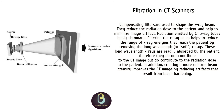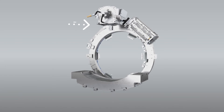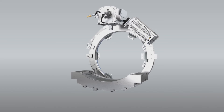The sixth component is filtration. Compensating filters are used to shape the X-ray beam, reduce radiation dose to the patient, and help minimize image artifacts. Radiation emitted by a CT scan X-ray tube is polychromatic. Filtering the beam helps reduce the range of X-ray energies reaching the patient by removing long-wavelength or soft X-rays, which are readily absorbed by the patient and do not contribute to the CT image but do contribute to radiation dose. Creating a more uniform beam intensity also improves the CT image by reducing artifacts from beam hardening.